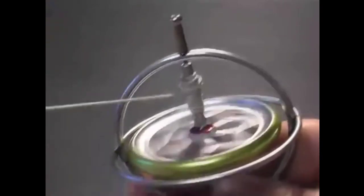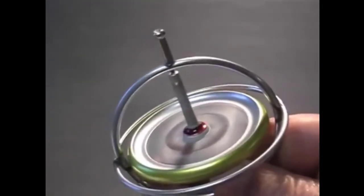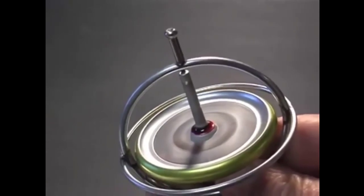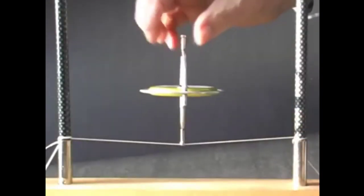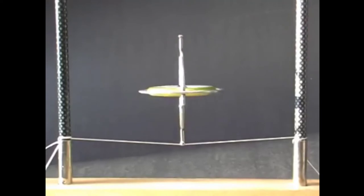Similarly, changing the orientation of the rotating wheel requires force. The spinning wheel prefers to stay oriented as it is, and it resists any attempt to change that orientation.